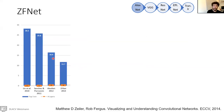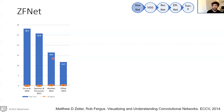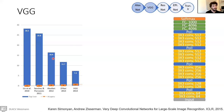The network that won the 2013 challenge is called ZFNet by Zeiler and Fergus. It's quite similar to AlexNet but with different parameters — it also has eight layers and achieved 11.7% error rate. Because it's quite similar to AlexNet, we're going to skip it today and talk about VGG.